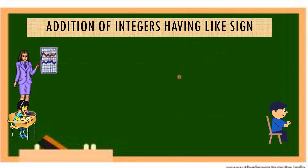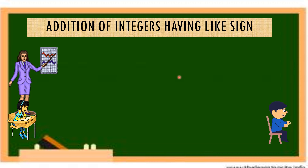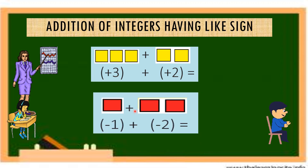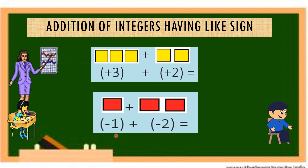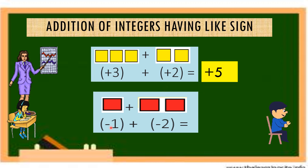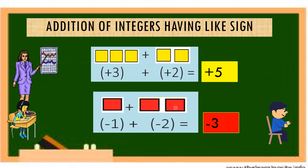For addition of integers having like signs, we use yellow for positive and red for negative. Positive 3 plus positive 2: counting all pieces gives us positive 5. Negative 1 plus negative 2: counting all pieces gives us negative 3.